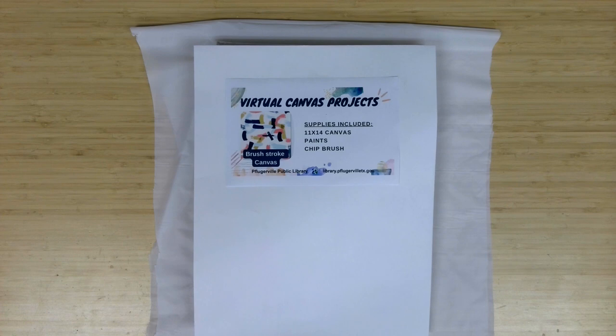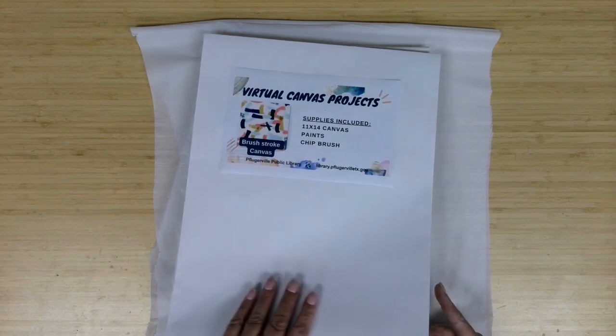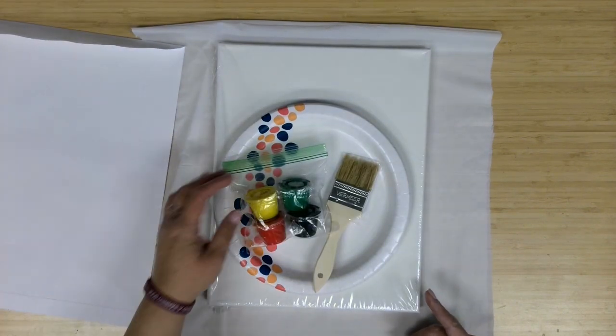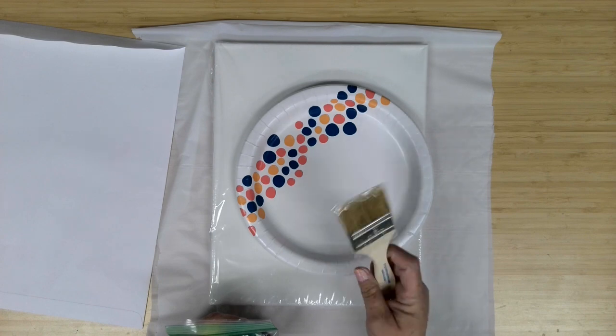Let's start with a look at the supplies being provided. So this month we've got our big white envelopes, and inside you are going to have the 11 by 14 canvas. This is a white paper plate since we've got a little bit bigger paint this month. It is a 2 inch chip brush.